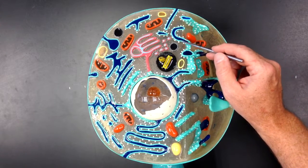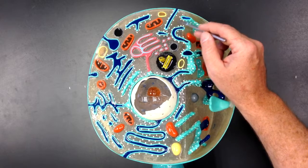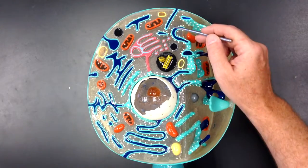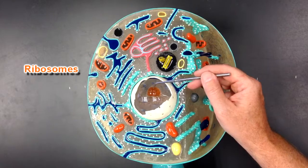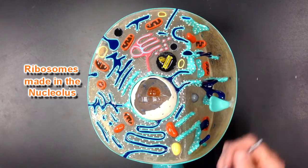We can see these white dots scattered all through the cytoplasm. Those white dots are ribosomes. Remember those ribosomes are made here in the nucleolus.